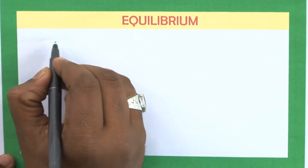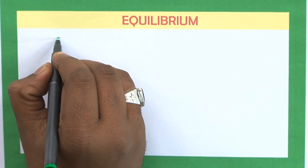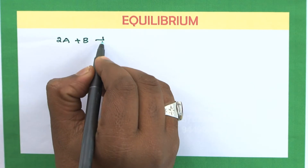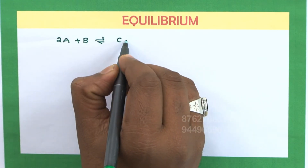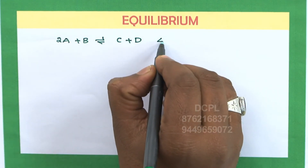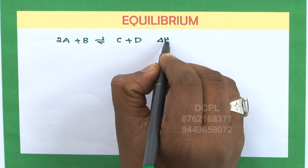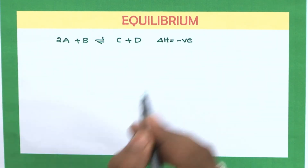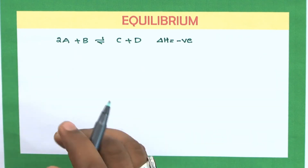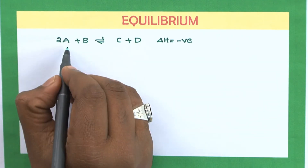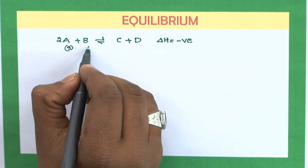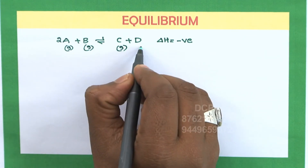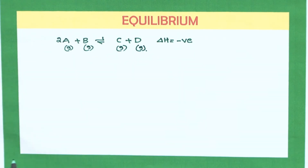Consider a reaction: 2A + B ⇌ C + D. Let the reaction be exothermic, that is, delta H for this reaction is negative, meaning during the process energy is released. Let us consider all the reactants and products are in the gas phase, that is A, B, and C are in the gas phase.